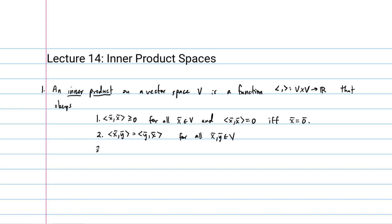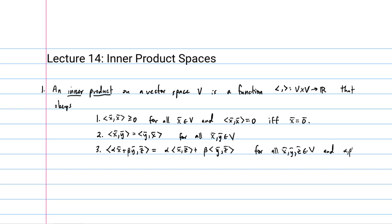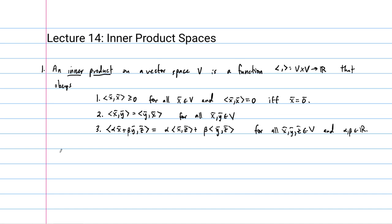Item one is positive definite and non-degenerate. Item two is symmetric. And item three is going to be linear — everything in this course turns out to be linear in some way or another. For the inner product, linearity means: ⟨αx + βy, z⟩ = α⟨x, z⟩ + β⟨y, z⟩. So the inner product can be broken up over addition and scalar multiplication factors out. This is true for all x, y, z in V and all α, β in our field — the real numbers.